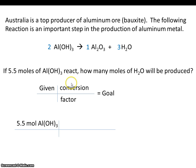The conversion factor comes from the balanced equation. Now the given is aluminum hydroxide, and the goal is moles of water. So our conversion factor should be between the given and the goal. The given is aluminum hydroxide, and the goal is water. So our conversion factor will be 2 to 3.